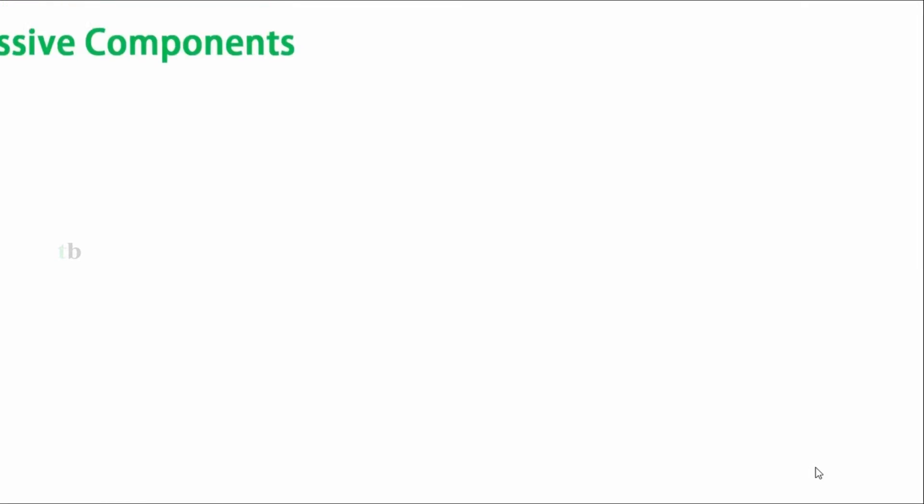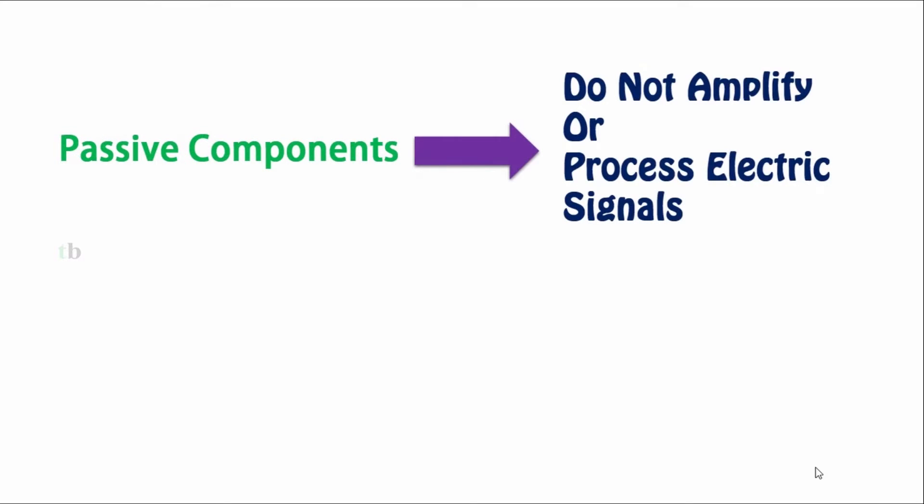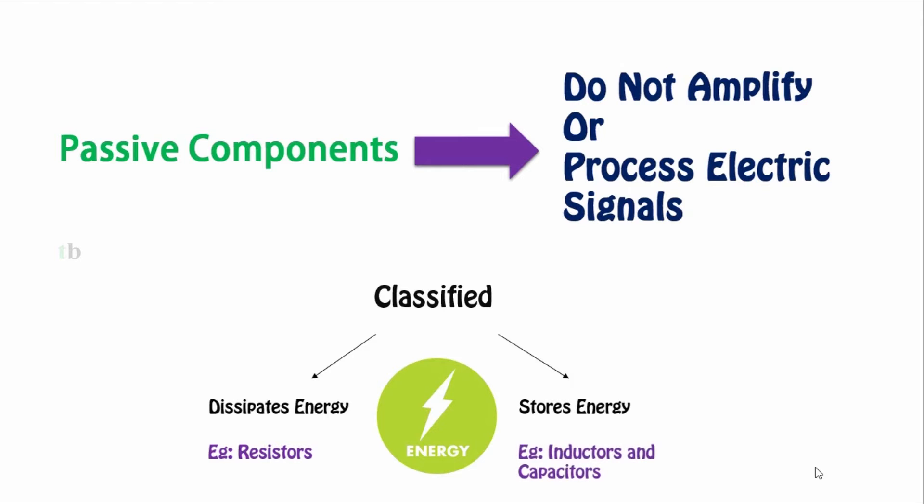Passive components do not amplify or process electrical signals. They are classified on the basis of energy: one which dissipates energy, for example resistors, and the other which stores energy, for example inductors and capacitors.